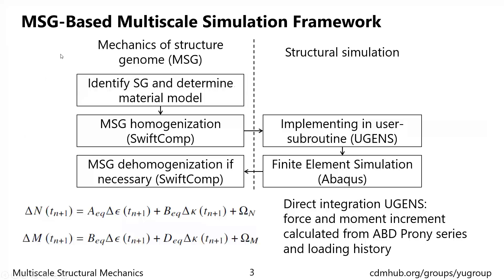The simulation framework in this study is based on MSG, which means Mechanics of Structure Genome. MSG is a generalized homogenization method proposed by Dr. Wenbin Yu. The focus of this presentation is structural simulation, but before that we need to start from MSG homogenization. To do so, we first need to identify the structural gene, or SG, which is the smallest mathematical building block of the structure. It is related with the geometry and also the materials. Then we can do the homogenization using a MSG-based code called SwiftComp to obtain effective properties. The effective properties are implemented into a user subroutine, and along with the finite element model, structural simulation can be carried out.